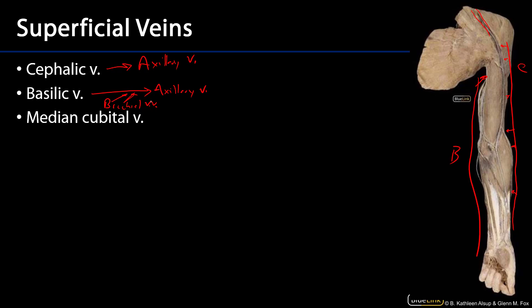Oftentimes there's a communication between the cephalic and basilic vein in the vicinity of the elbow, or in the antecubital fossa — so it's anterior there — and this is called the median cubital vein. That median cubital vein gets a lot of press because it's very frequently targeted for venipuncture. If you explore your cubital fossa, you may be able to visualize the median cubital vein.